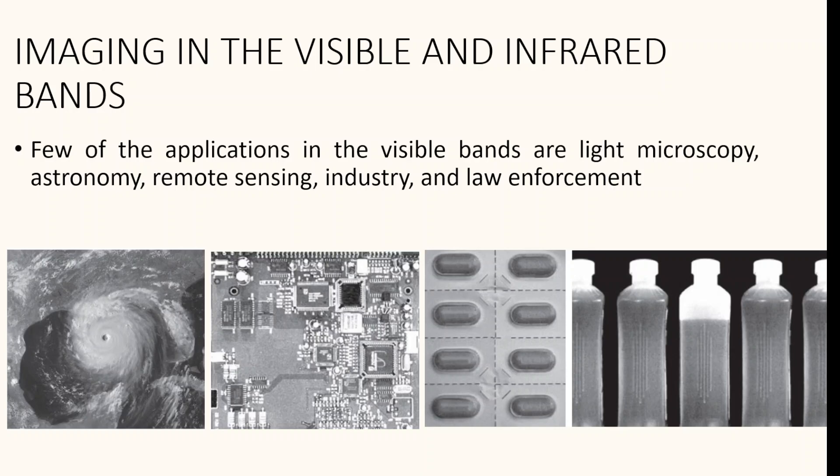The applications in the visible and related bands are numerous. Remote sensing is one of the major applications — images of population centers are used to assess population growth, shift patterns, and other environmental factors. Weather observation and prediction are also major applications of multispectral images from satellites. In the first figure, you can see the eye of the hurricane clearly visible in an image of Hurricane Katrina.